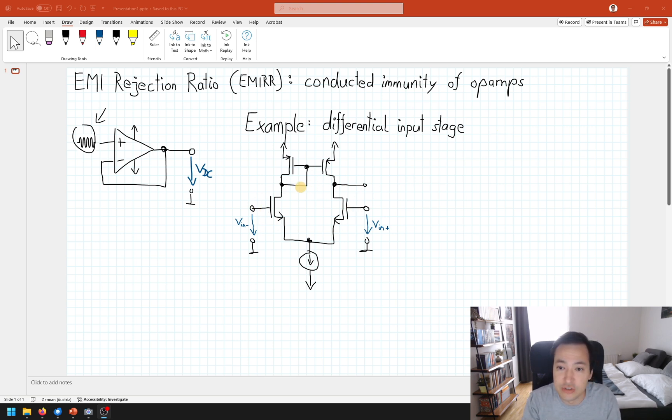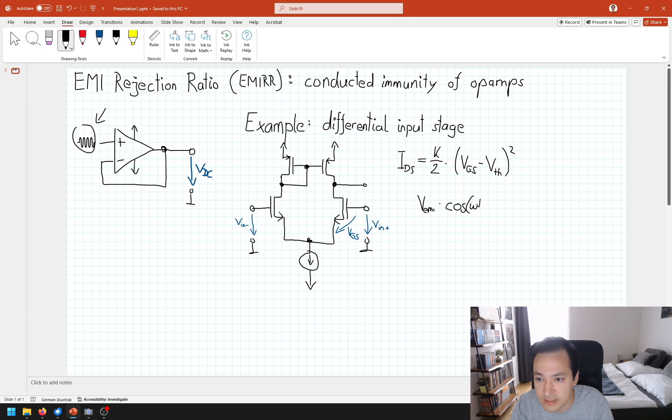If we take a look at our transistors of our input stage, then by design we would like to operate them in saturation region. Our current can be calculated with a factor K divided by 2 times VGS minus the threshold voltage squared. Now VGS squared leads to a DC component. Because here we have our VGS and we apply our EMI voltage here. Oversimplified, let's say we apply VEMI times cosine omega t. This is our RF signal. So what happens? We get VEMI squared times cosine squared omega t.